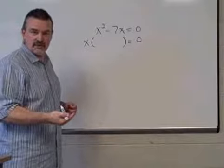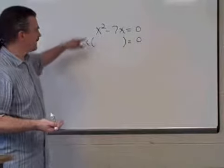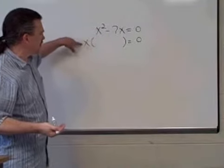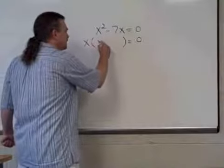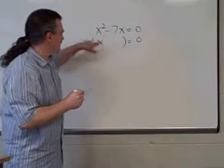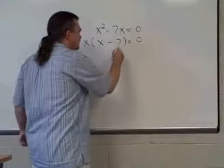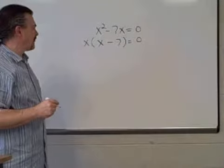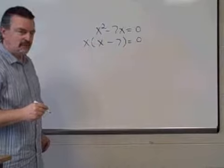We can divide each of those terms by x to the first power. Dividing x to the second power by x to the first power leaves us x to the first power. Dividing minus 7x by x gives us minus 7, and we have factored that binomial.